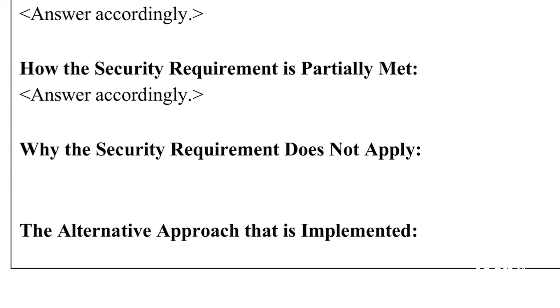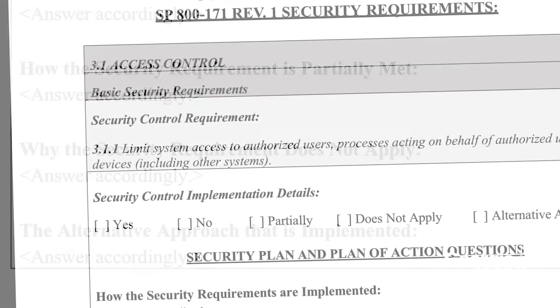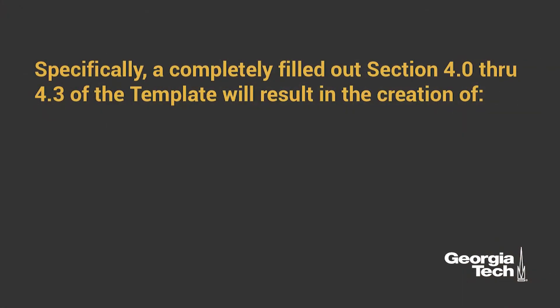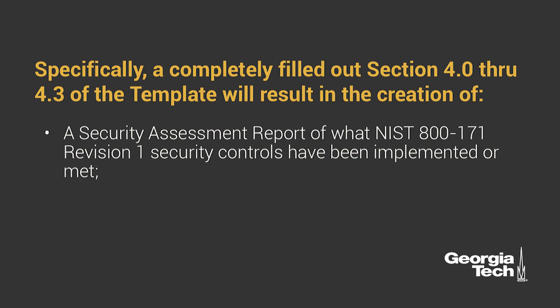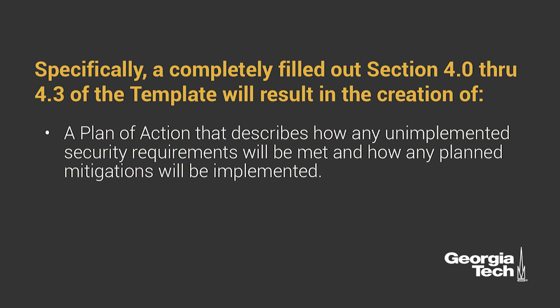In summary, you should review each requirement listed in Section 4.3 and answer the security plan and plan of action questions. By answering the questions and providing the required information for each requirement, you will be creating the required system security plan and plan of action needed to achieve compliance. Specifically, a completely filled out Section 4.0 through 4.3 of the template will result in the creation of: a security assessment report of what NIST SP 800-171 Revision 1 security controls have been implemented or met; a system security plan that details the system boundary, the operational environment, the relationships with or connections to other systems, and how the security requirements are implemented or how the contractor plans to meet these requirements; and a plan of action that describes how any unimplemented security requirements will be met and how any planned mitigations will be implemented.